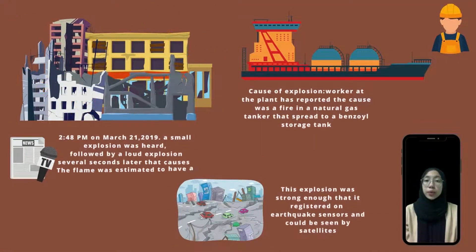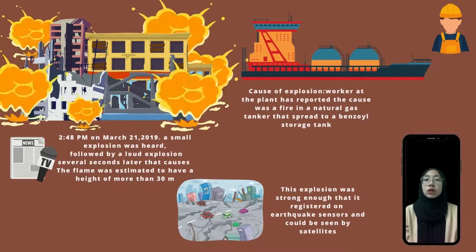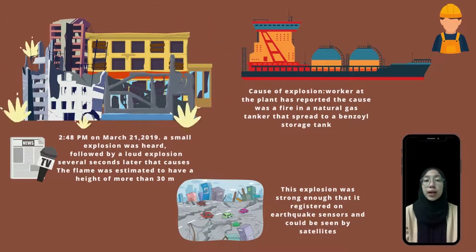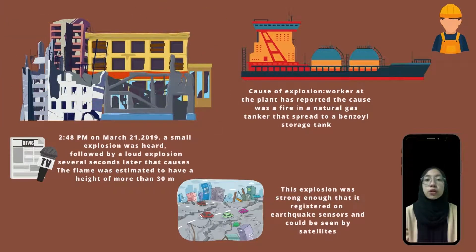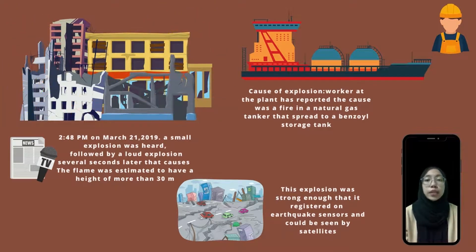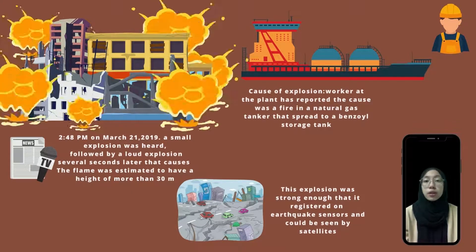Assalamualaikum warahmatullahi wabarakatuh. My name is Nurul Aina Najwa binti Roslan. Today I will continue this presentation to discuss the accident exposition at the chemical plant that happened in Zhangxiu, China. The first fire was observed in the plant at 2:48 PM on March 2019, when a small explosion was heard by a worker.